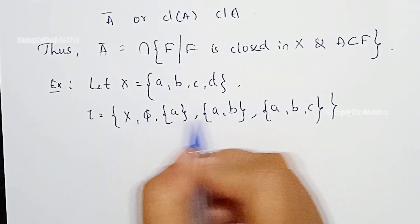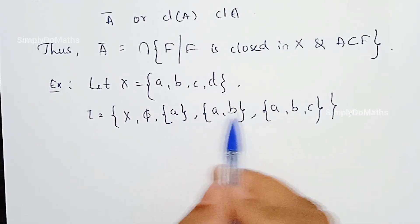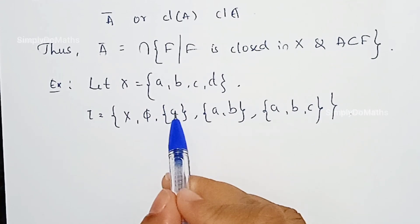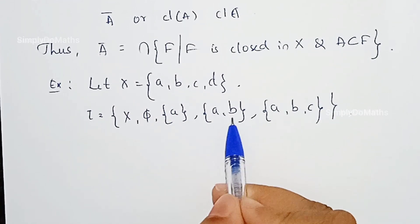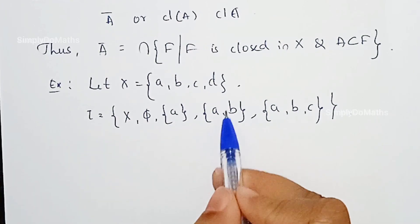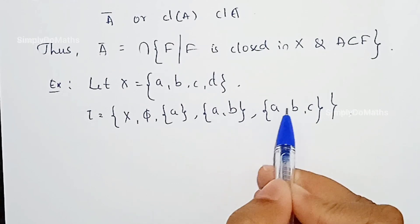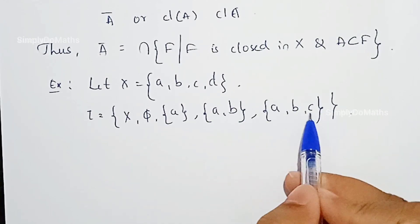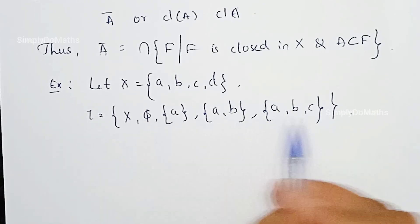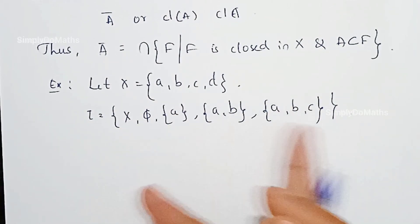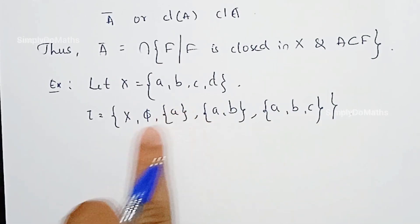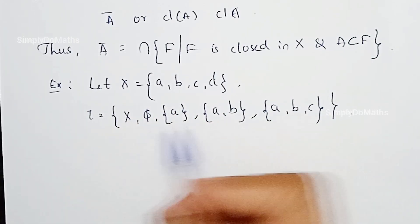X and empty set belong to τ, so the first property holds. For the second property — union — the union of {A} and {A, B} is {A, B}, which belongs to τ. The union of {A, B} and {A, B, C} is {A, B, C}, which also belongs to τ. The union with empty or with X also stays in τ, so the union property holds.